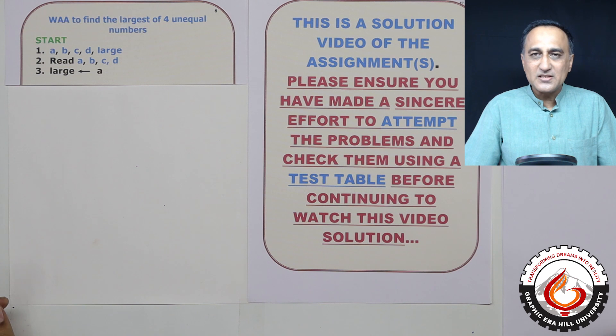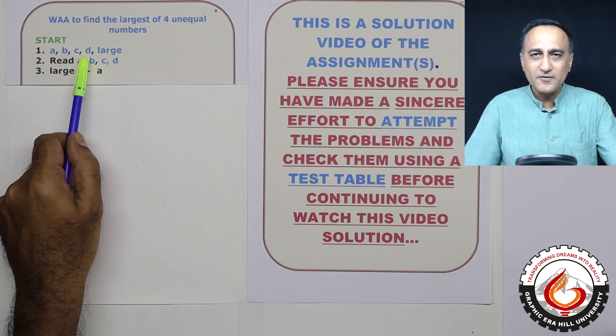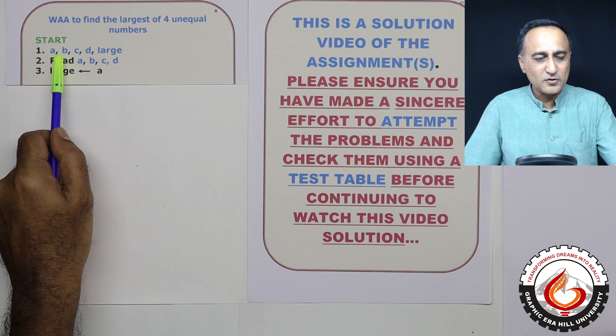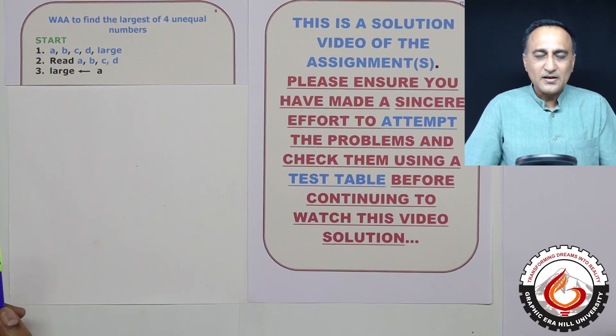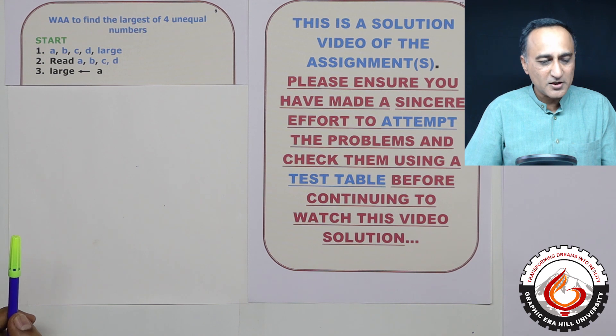So here what I have is, I need four memory locations called A, B, C, D to store the four numbers. Large is going to contain the largest of those four numbers. Then in the second step, I'm going to ask the user to enter the value of A, B, C, and D—that means enter values into four memory locations.